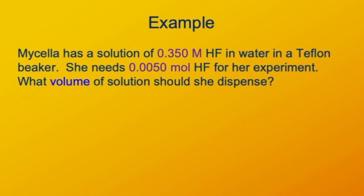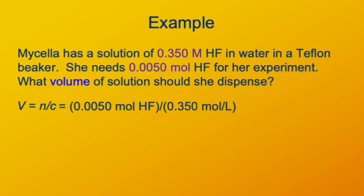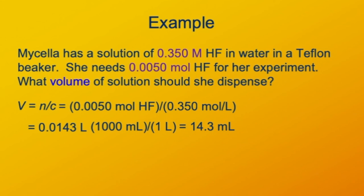Micella needs 0.005 moles of HF for her experiment. What volume of solution does she need to dispense? Volume equals number of moles divided by concentration: 0.005 moles divided by 0.350 molar gives 0.0143 liters. Converting to milliliters by multiplying by 1,000 gives 14.3 milliliters. The number of moles was specified to only two significant figures, so our final answer is 14 milliliters of solution.